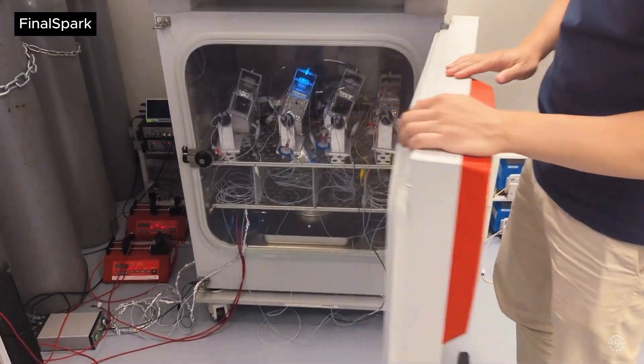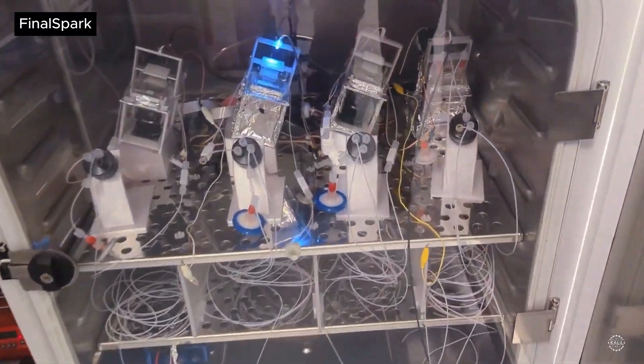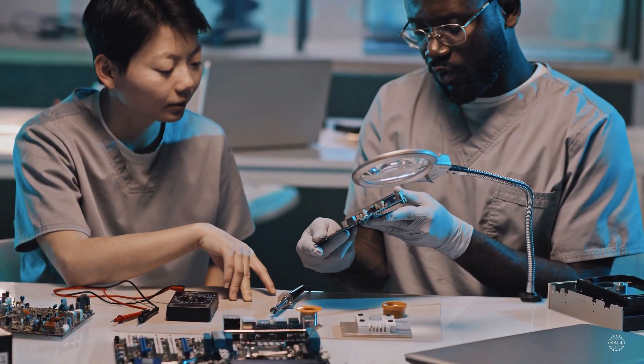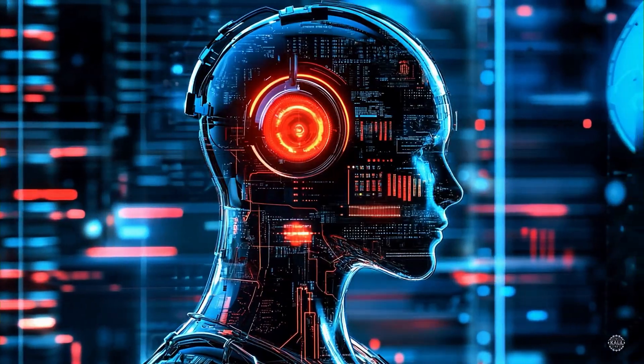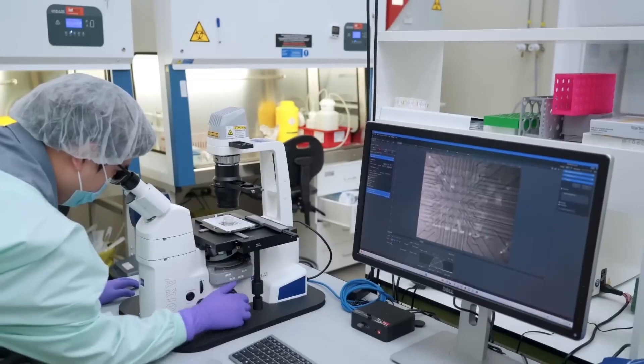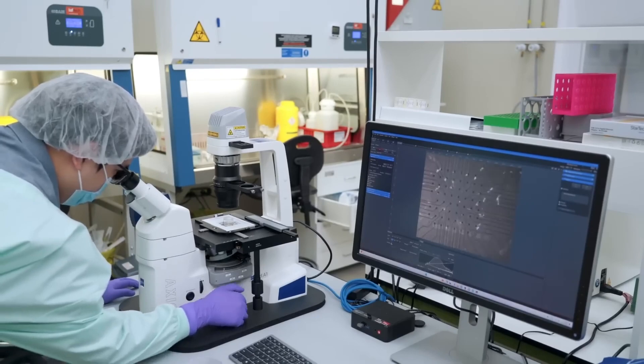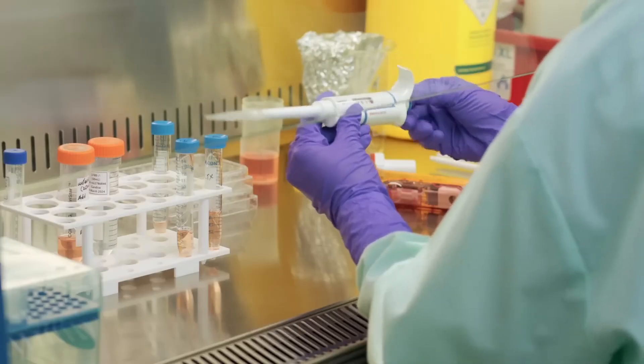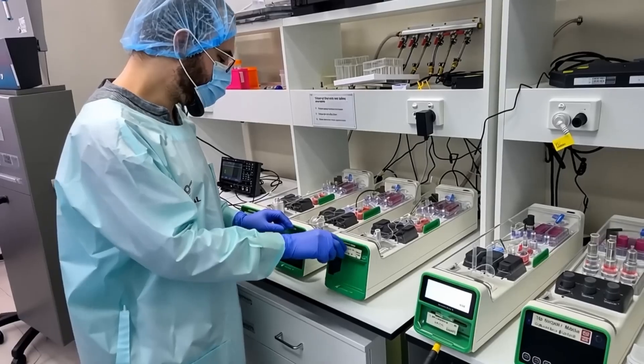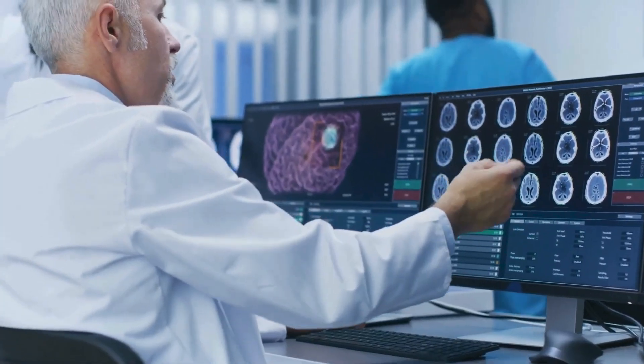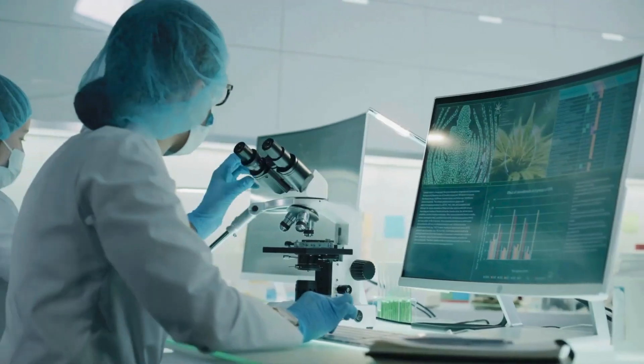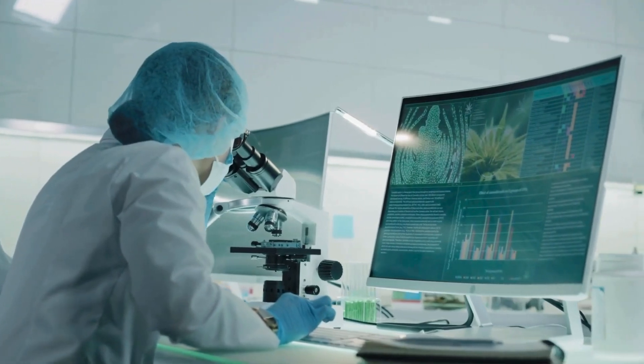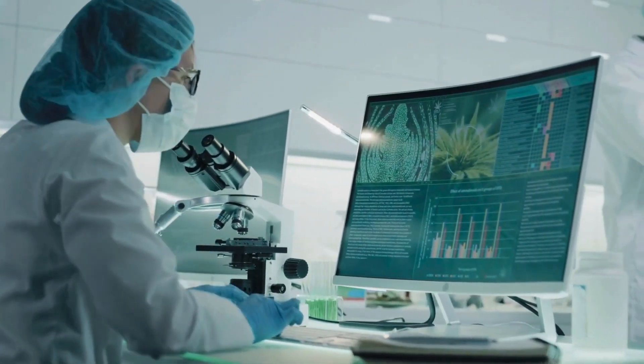In science fiction, the idea of a brain in a box is often portrayed as a futuristic concept where a human brain functions without a physical body. Although this technology is not available right now, scientists are looking into different ways to create a similar result. Creating a very advanced artificial neural network that can mimic human thinking is one way to possibly transfer a person's brain contents into a machine.